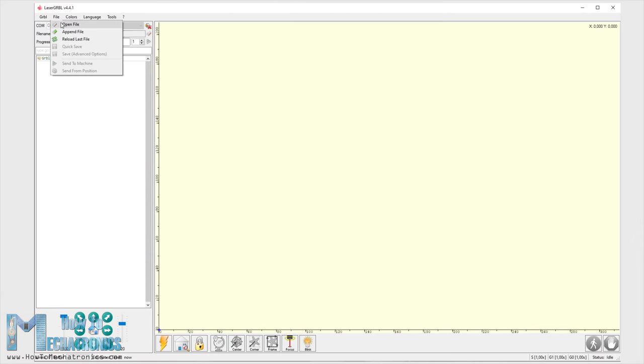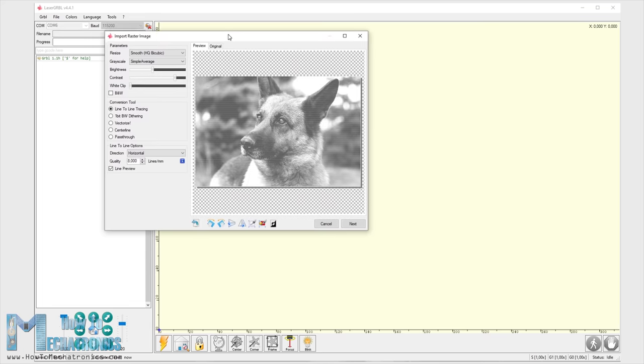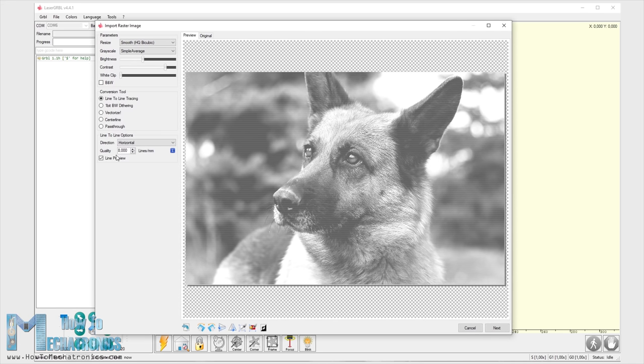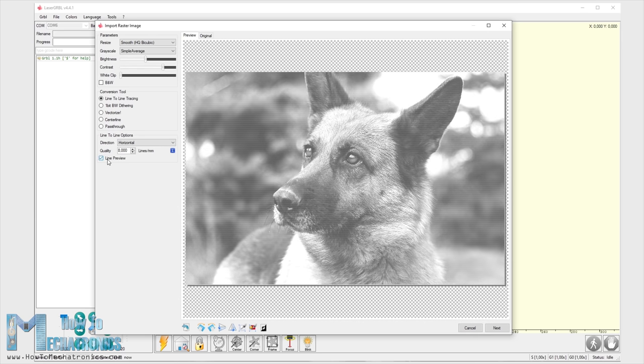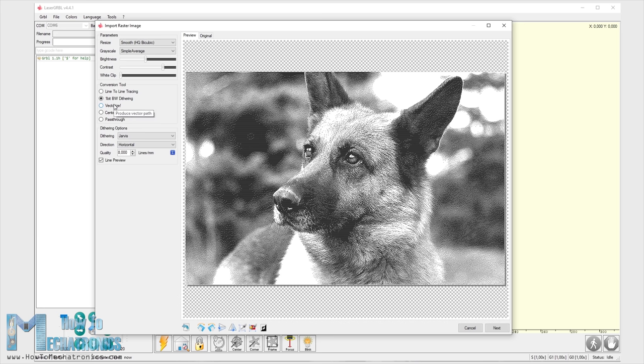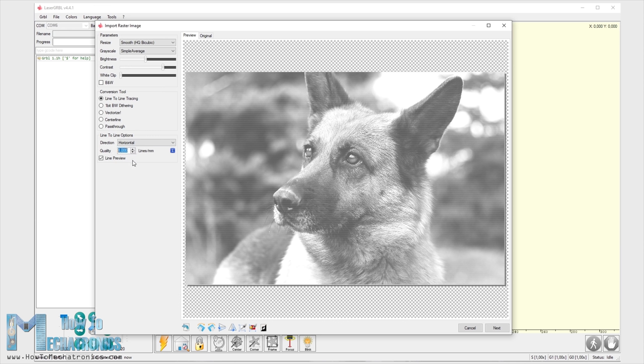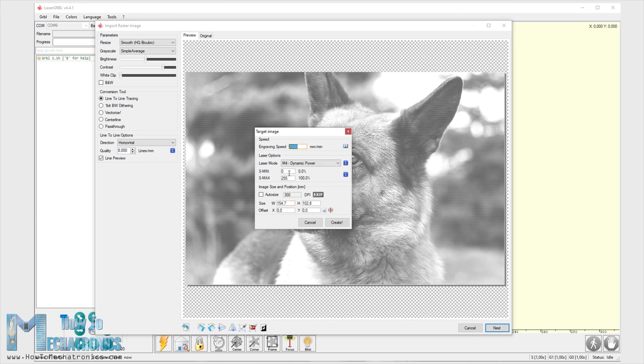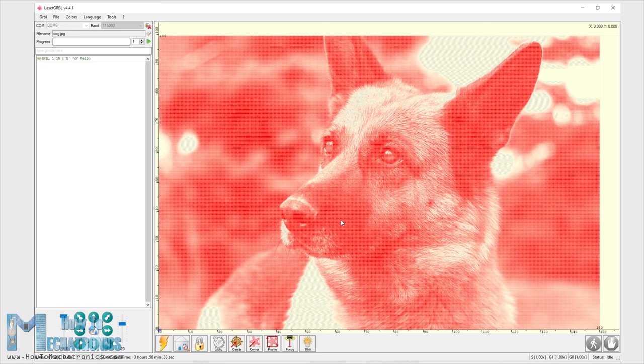Now I will show you how you can generate G code for laser engraving from a photo using LaserGRBL. Here I have a photo of a dog which I will open with the software. Using the brightness and the contrast options we can adjust the image to our desire. We can choose the type of conversion of the photo, for example line to line tracing, one bit black and white dithering, a vector format and so on. I will use line to line tracing for this photo and here we can also select the line direction and the quality of the engraving which is defined by how many lines per millimeter there will be. Next we can select the engraving speed, set the minimum and maximum PWM values for the laser power and set the size of the engraving. And that's it, the software will now generate the G code for this engraving.